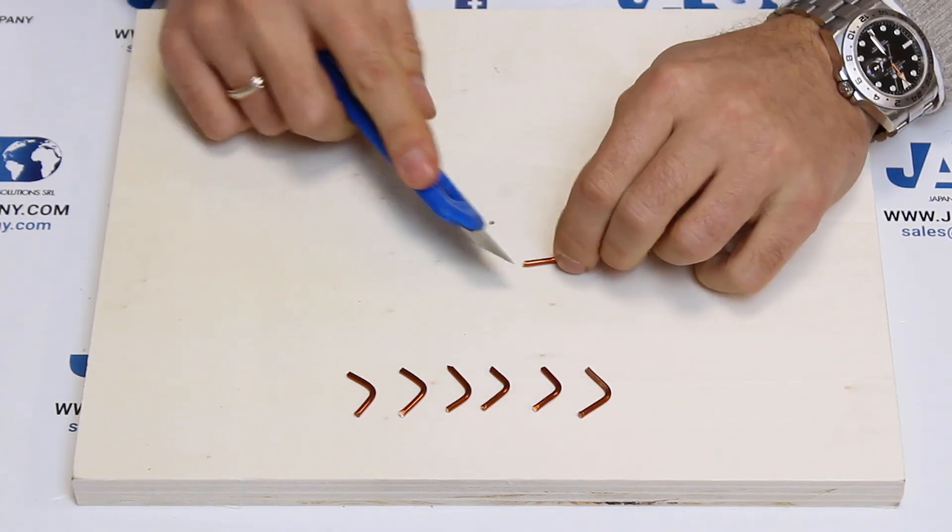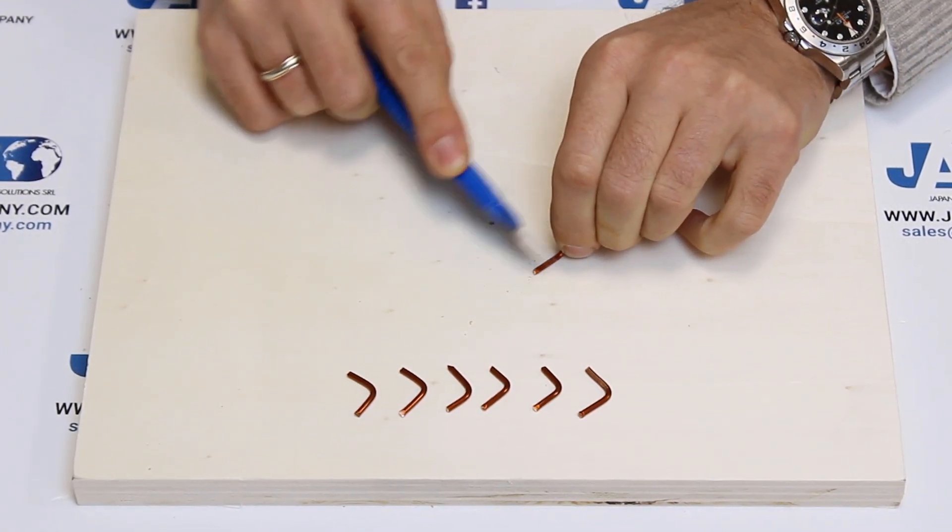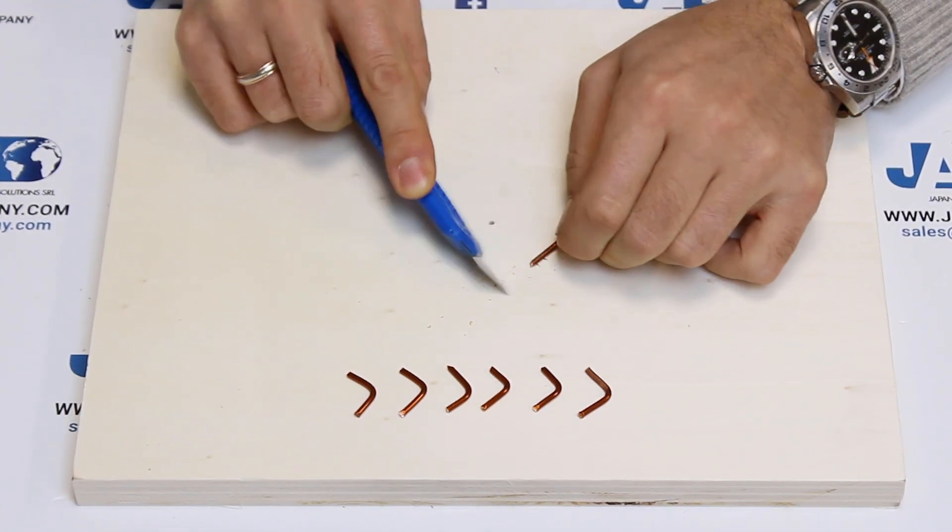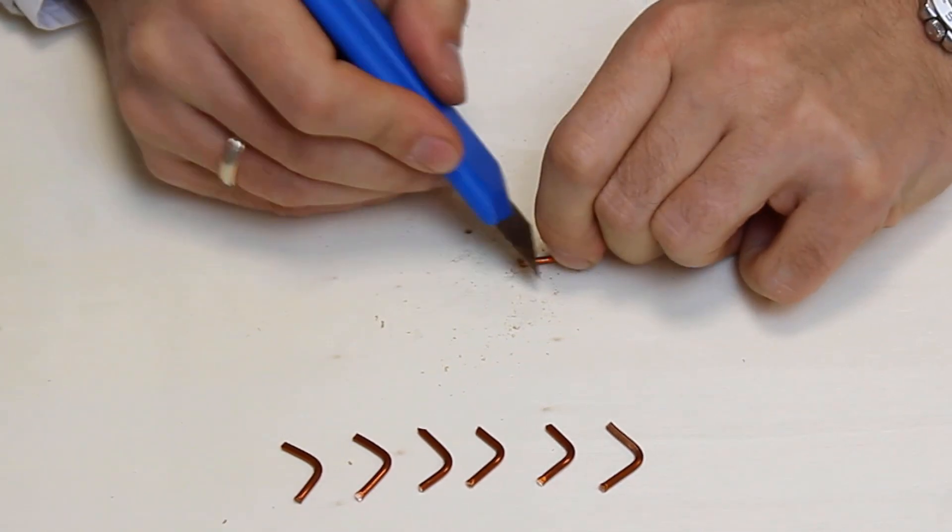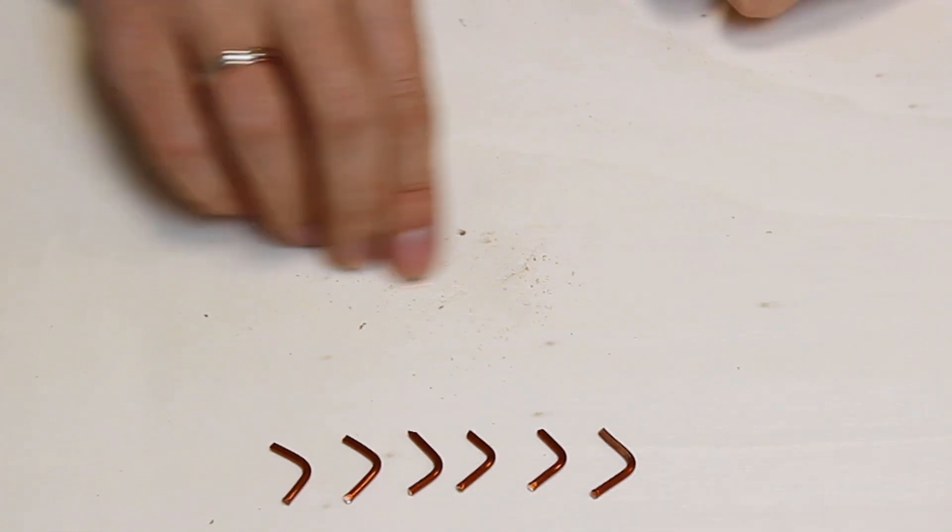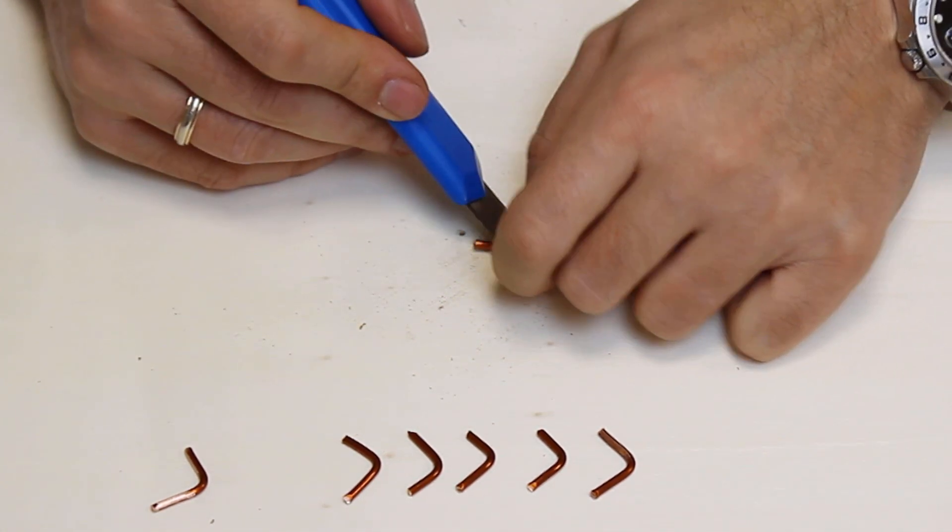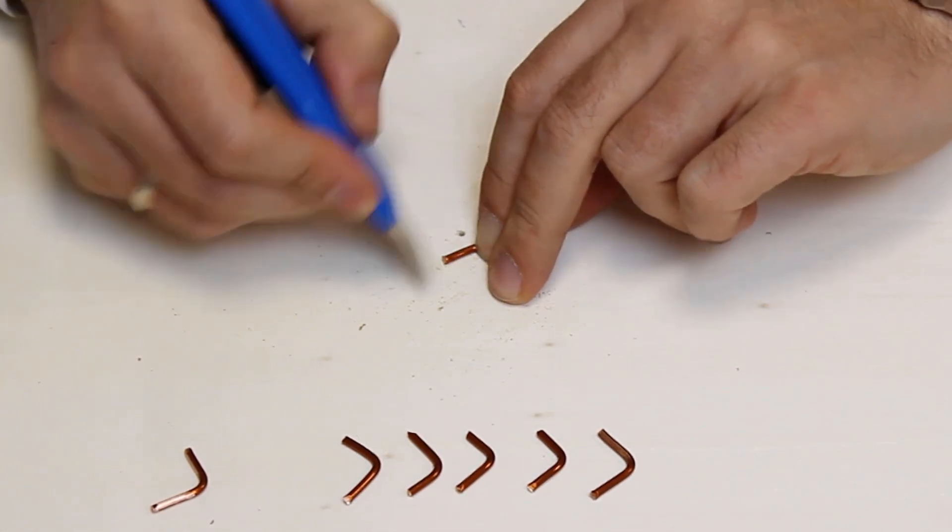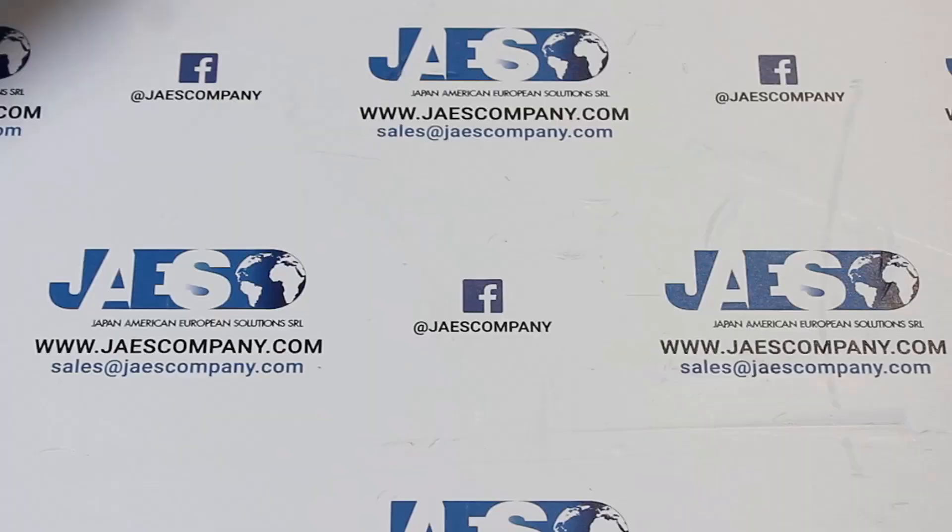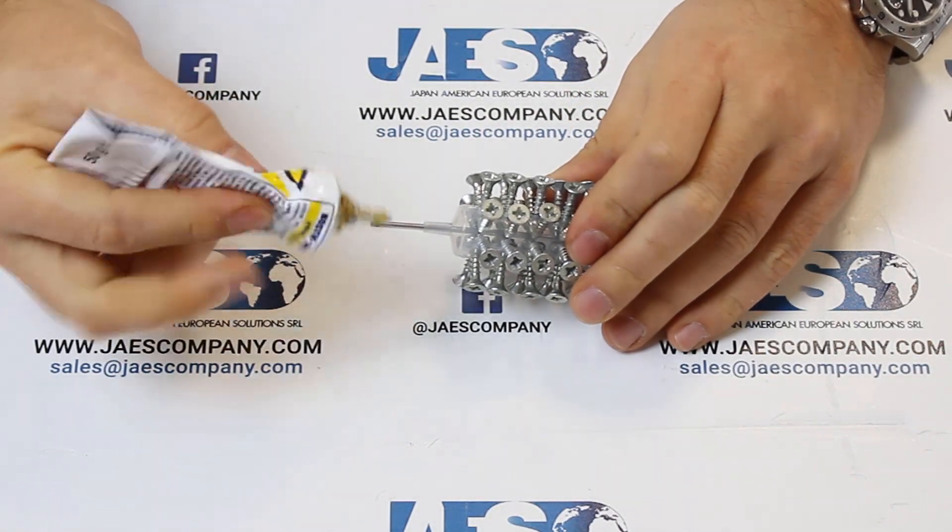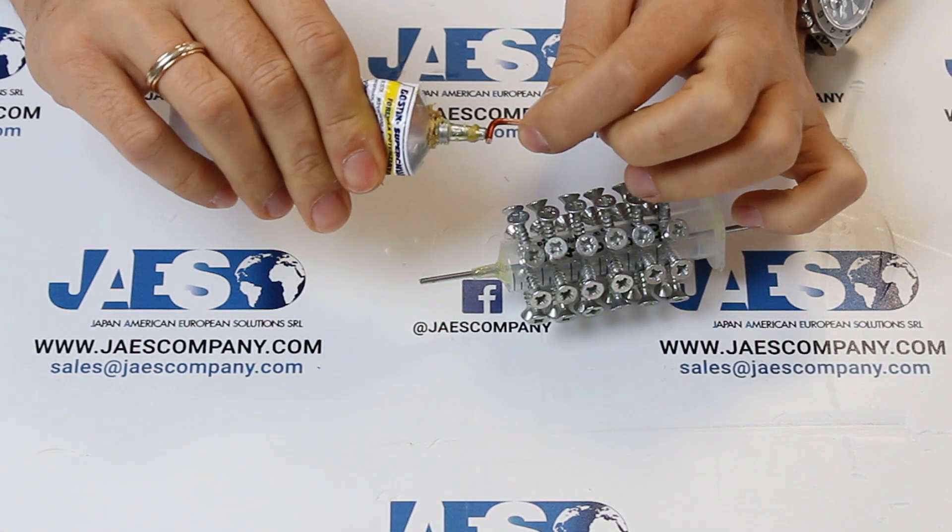We are going to remove the isolation layer of the copper on the points where we will weld. Now we can glue the small shaped pieces of copper over every single row of screws.